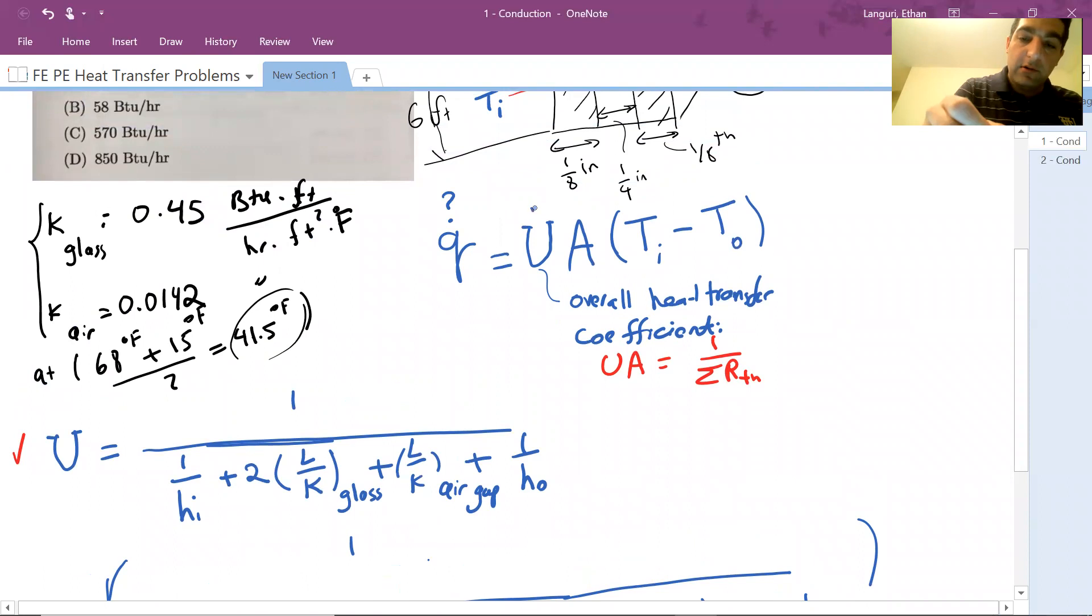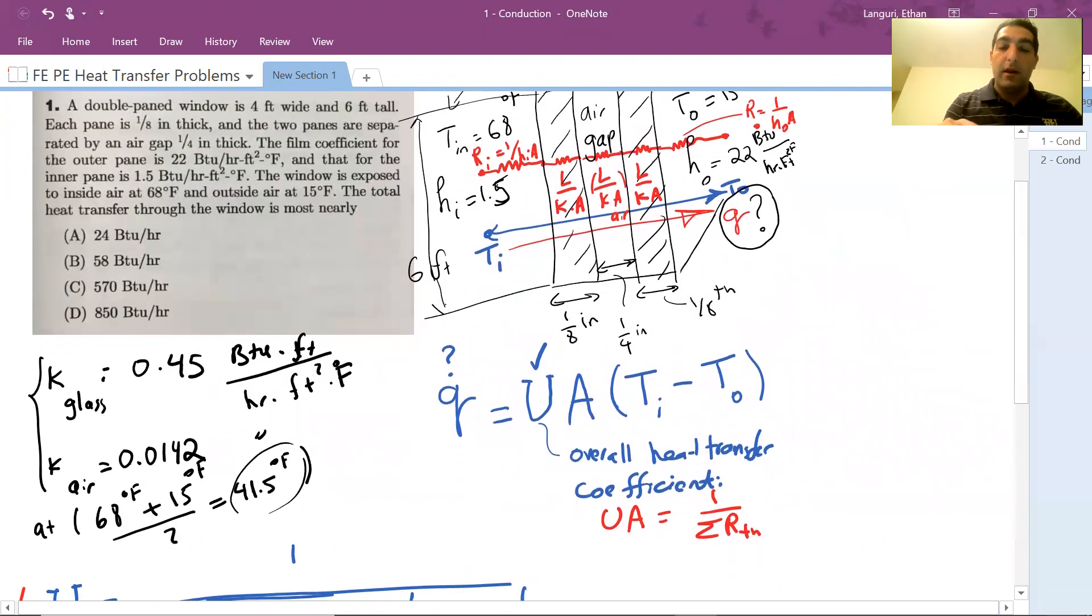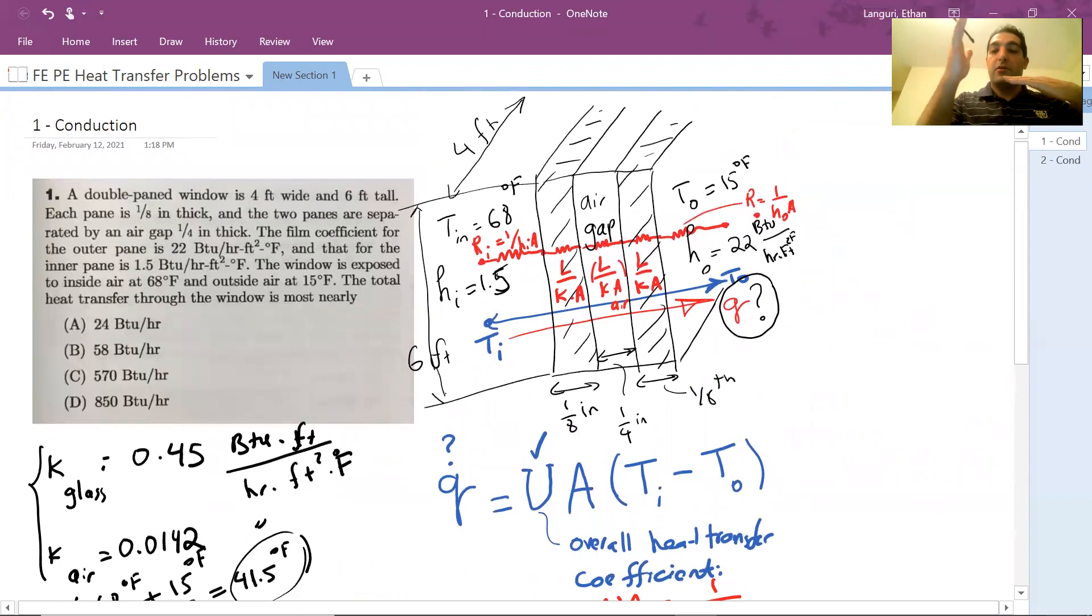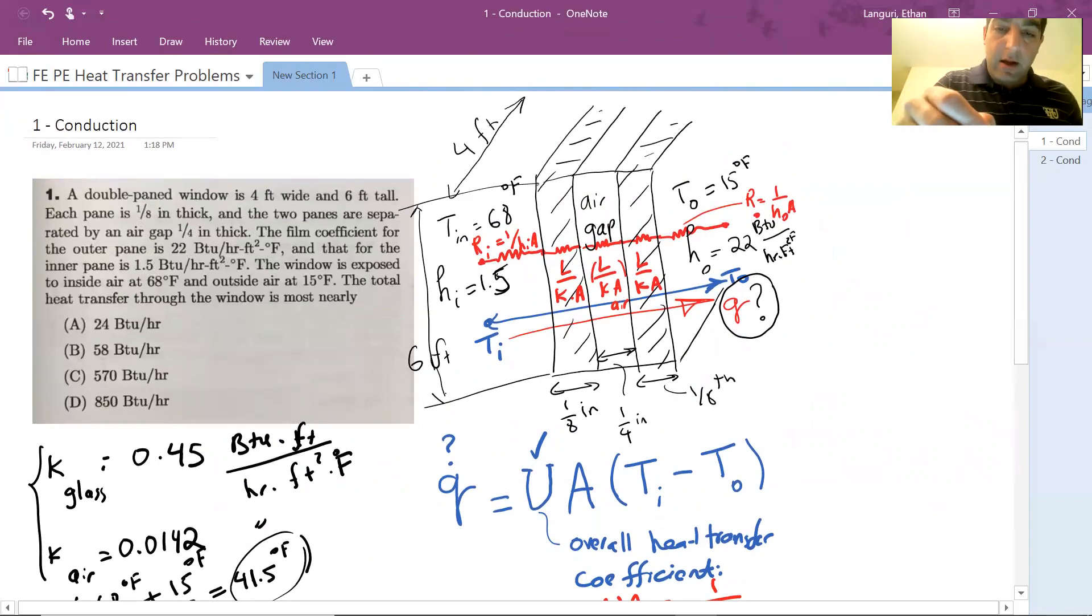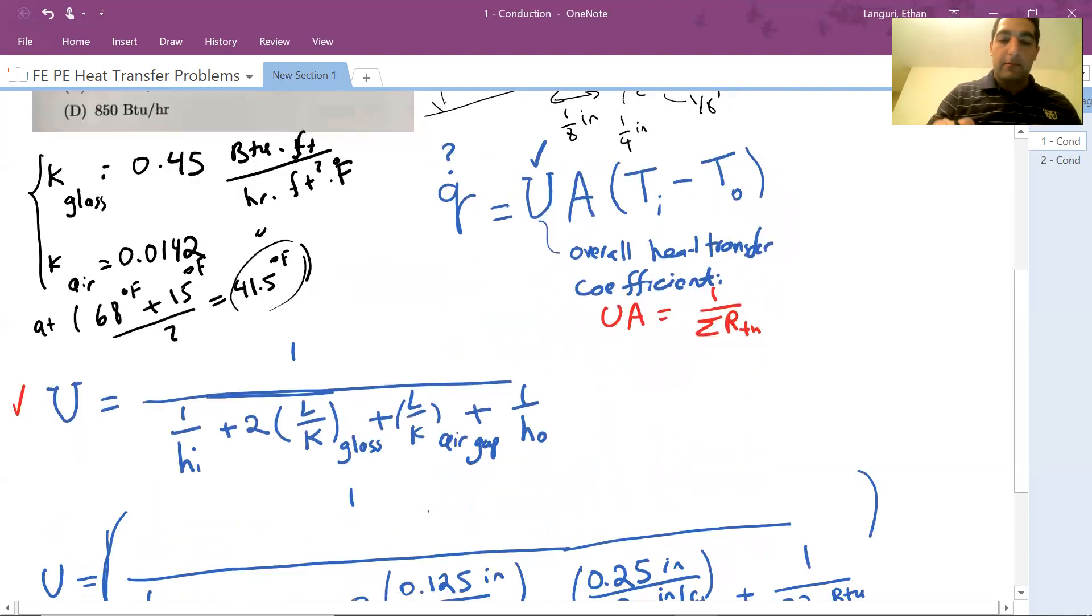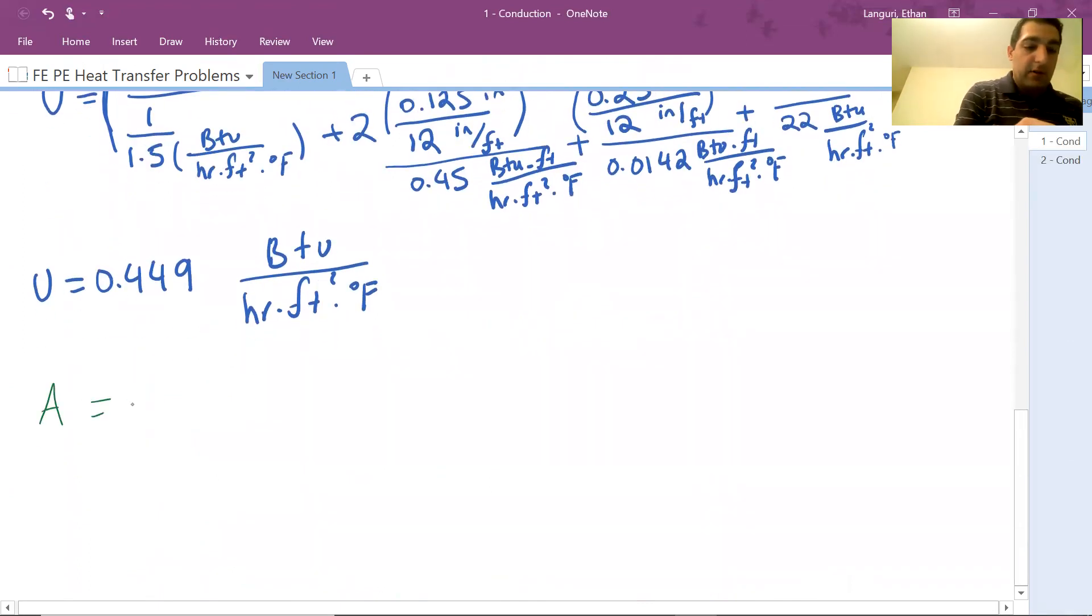Again, going back to this equation, we're looking for Q. So far I have U. I know the inner temperature, outer temperature. Let's find area. Again, in composite wall, area is the area that heat is crossing. In this case, if I'm going to show my area with a green color, I have the height of 6 feet and then length into the board of 4 feet. This is the area that heat is crossing. That's the area I need. So this is my area. In this case, my area would be simply B times H, which is nothing but 4 feet times 6, 24 feet squared. So now I have everything.